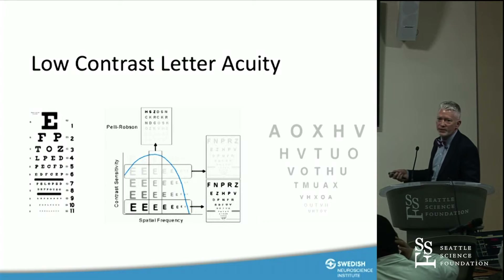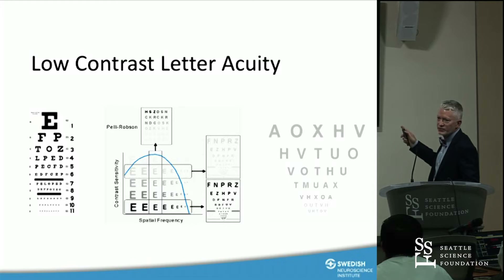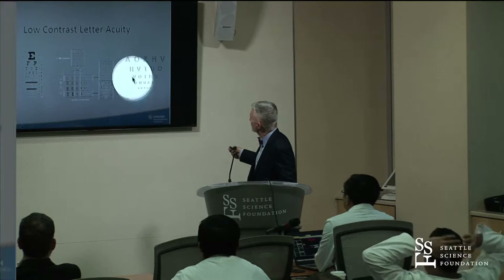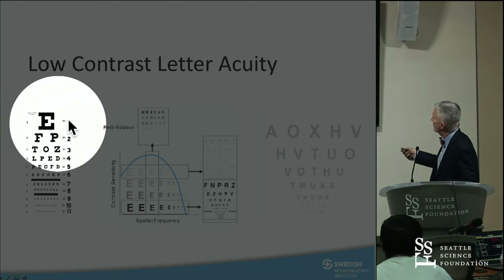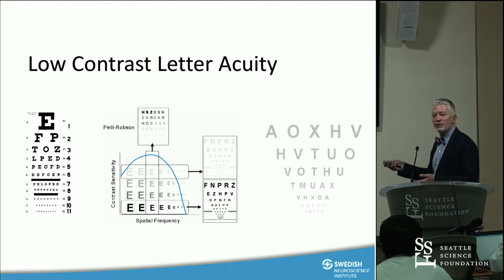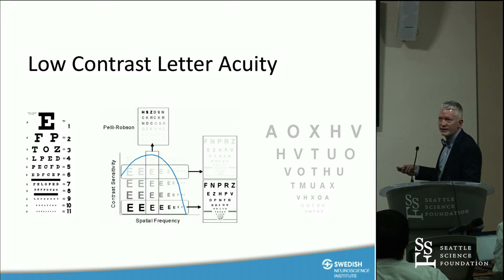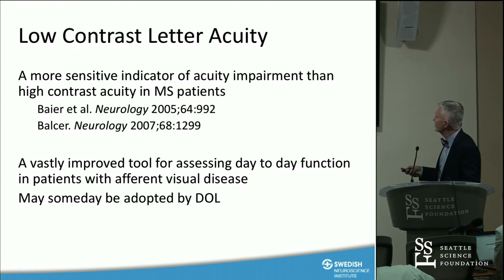There's not an equal number of letters on every line, and some letters are much easier to see than others, like T or O. So we changed the charts — now they have the same number of letters on every line. This is a low-contrast acuity chart with evenly spaced letters and various shades of gray. We use 4.5% contrast for MS patients. It gets quite difficult to see the smaller letters, and it correlates very highly with OCT findings and patients' subjective visual function.